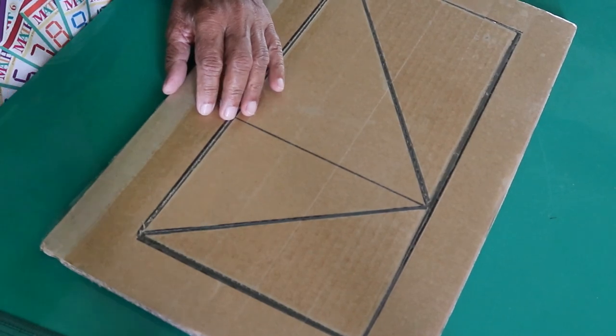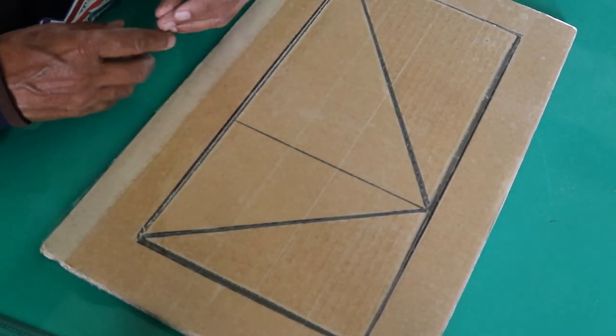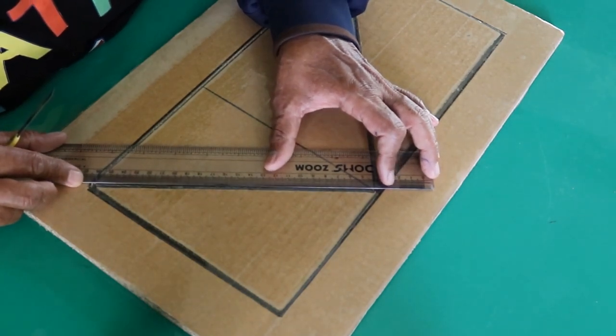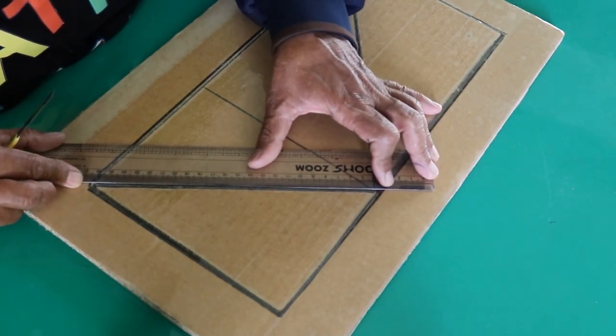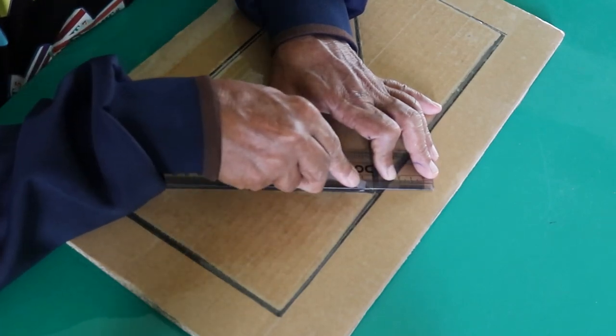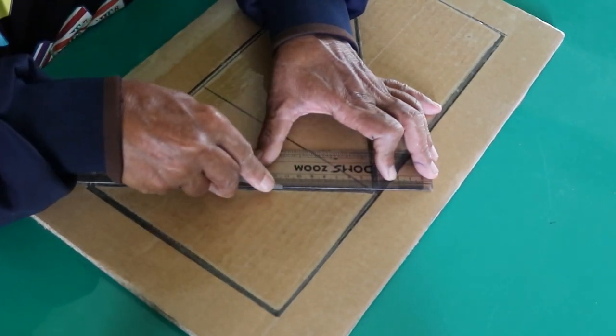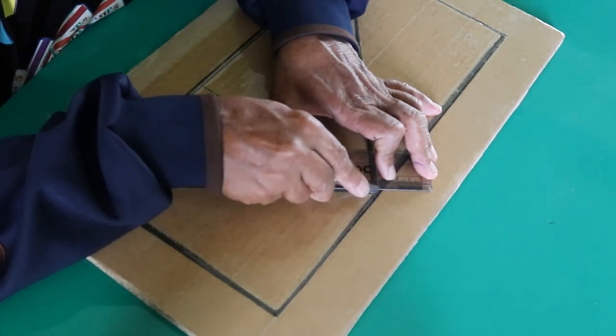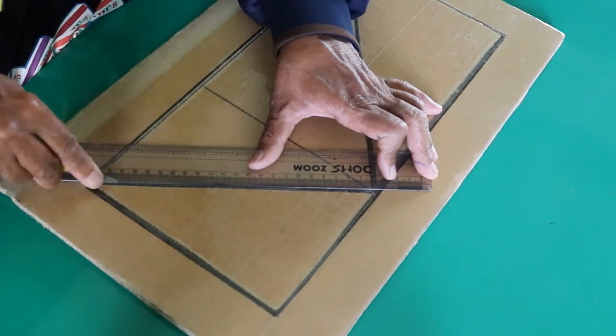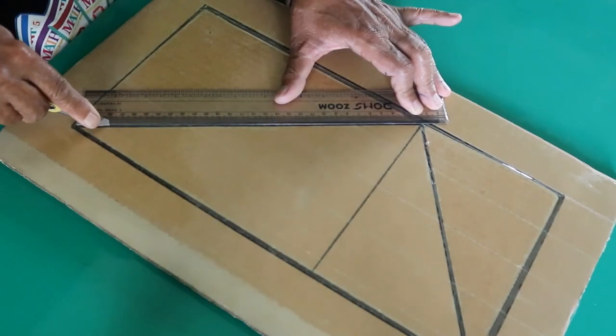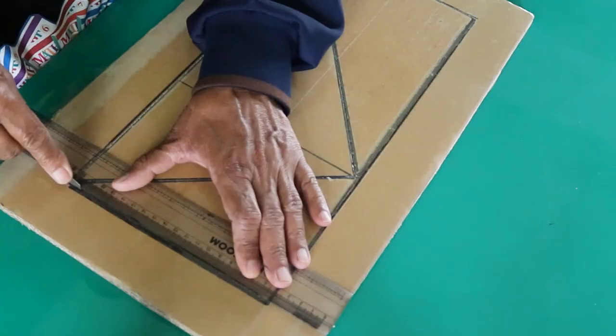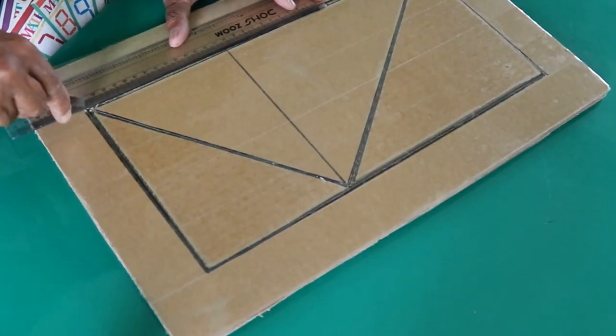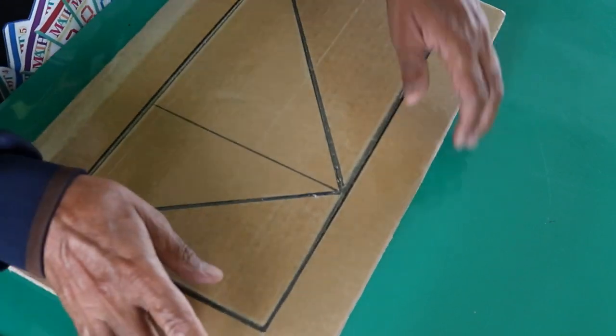So take the paper knife and the ruler and cut out along the triangle, the side of the triangle, round about. So you cut it this way. This way. Now your material is ready.